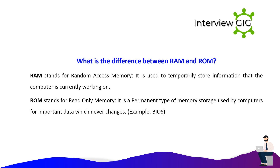What is the difference between RAM and ROM? RAM stands for Random Access Memory; it is used to temporarily store information that the computer is currently working on. ROM stands for Read-Only Memory; it is a permanent type of memory storage used by computers for important data which never changes. An example of ROM is the BIOS.